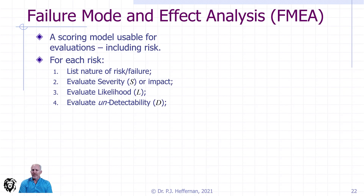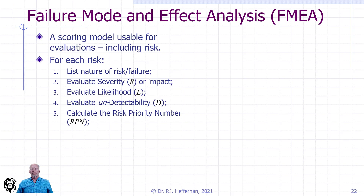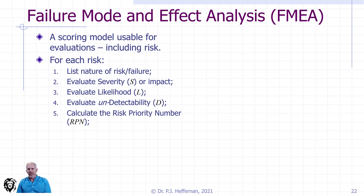If we can't detect a risk, the chances of us being able to respond to it in a timely way or to avoid it becomes less. So we have this undetectability factor, D, that we add in. Between these three parameters, we calculate the risk priority number, or RPN. The RPN is the product of the three: the severity, the likelihood, and the undetectability.